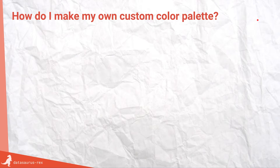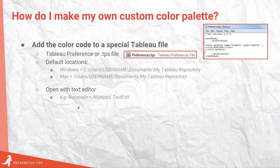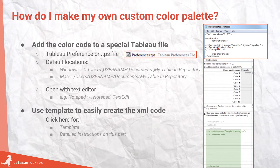This is where you do a bit of a slightly codey thing. You need to find a special Tableau file called the Tableau Preferences file, or TPS. Default locations on Windows and Mac are shown here. Once you've found it, open it with a text editor like Notepad++, Notepad, or TextEdit and it will look like this. You then pop in the special code with the hexadecimal values for your colors. I've got a nice template you can use — pop in the values and the name of your color palette, copy the code in, and there are more instructions on how to do that.